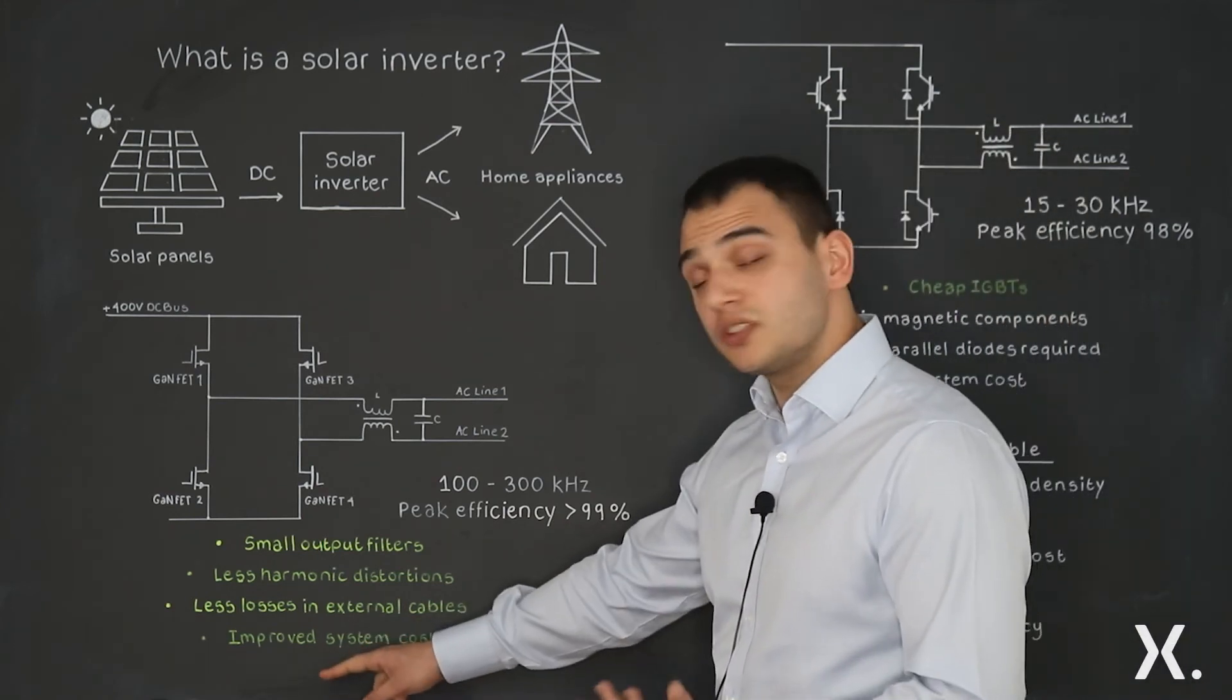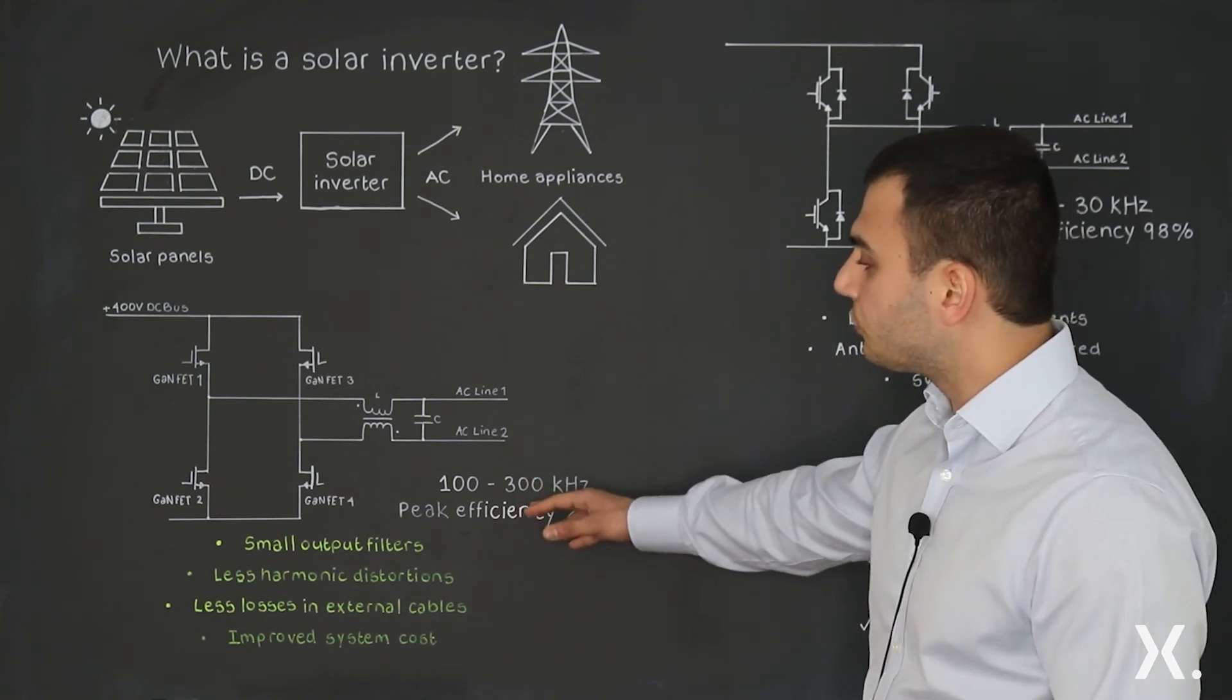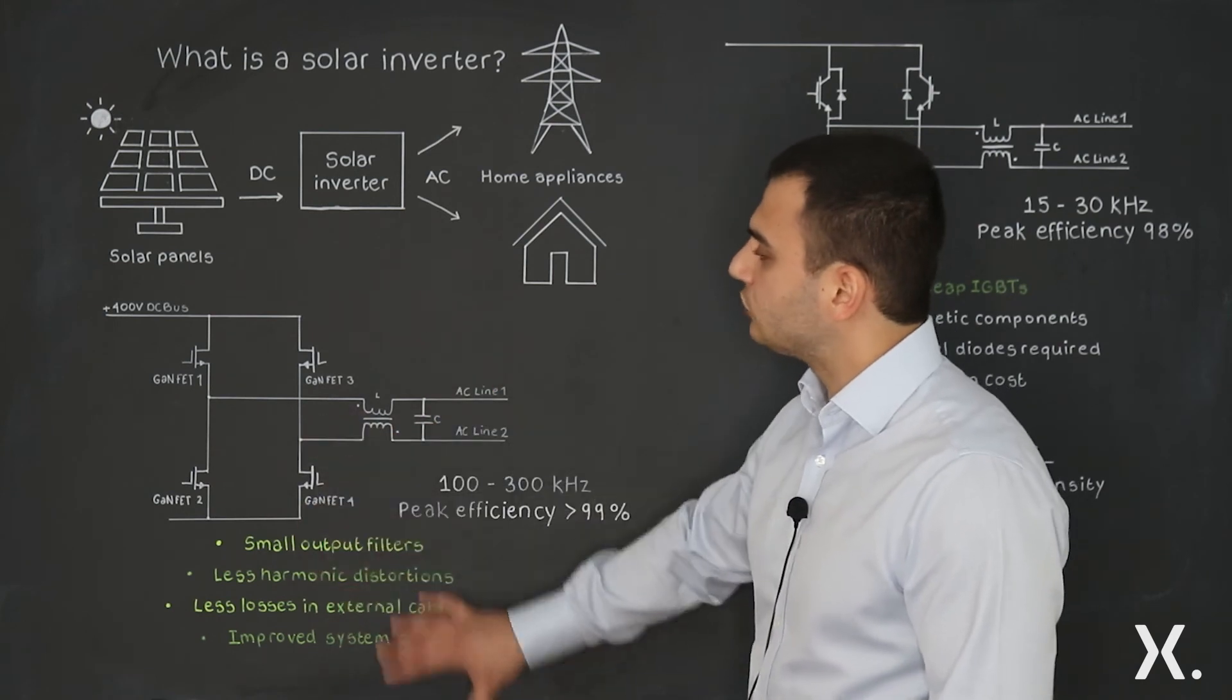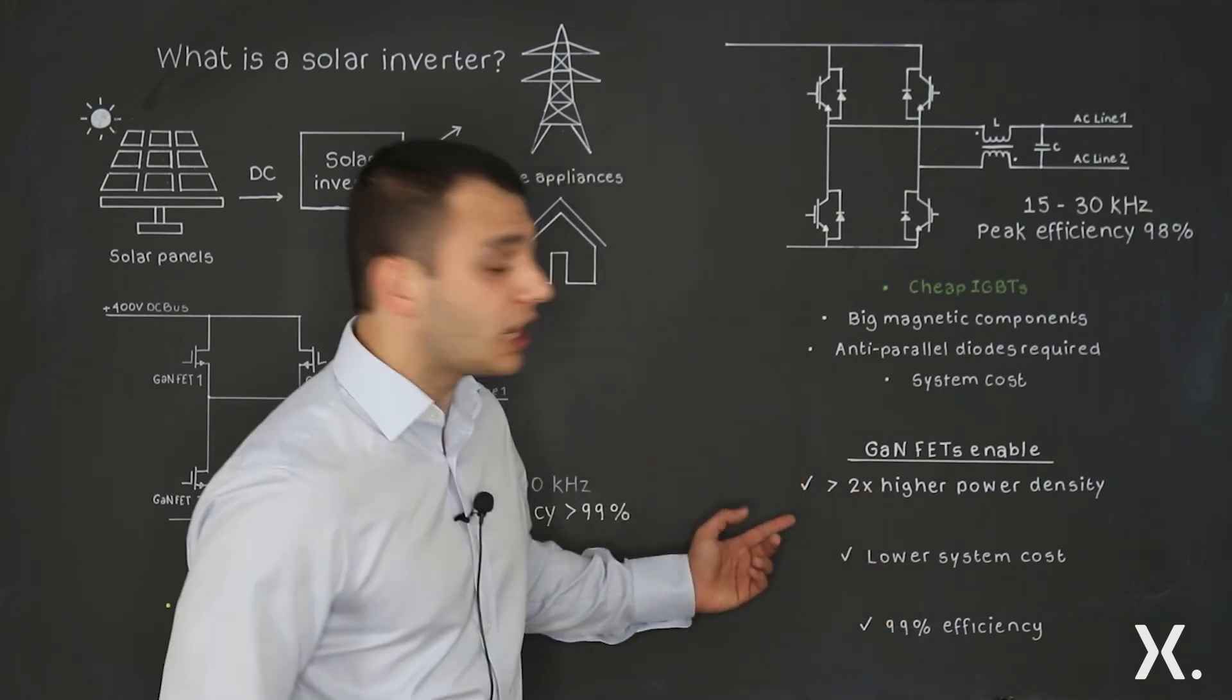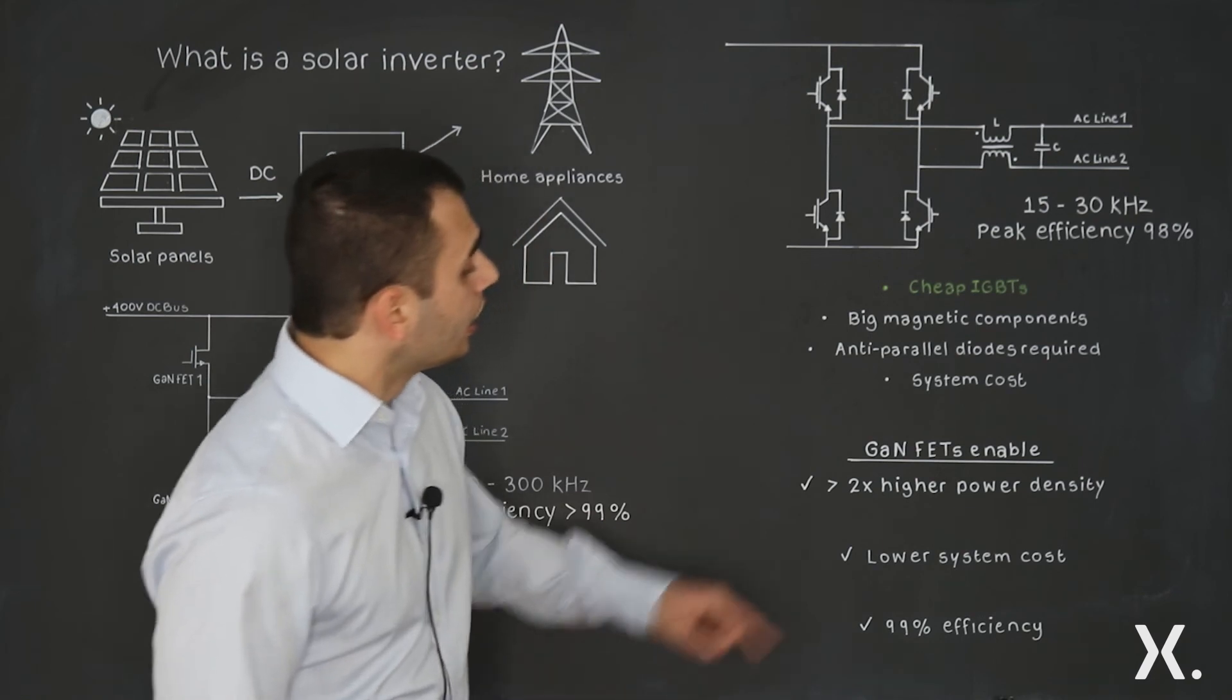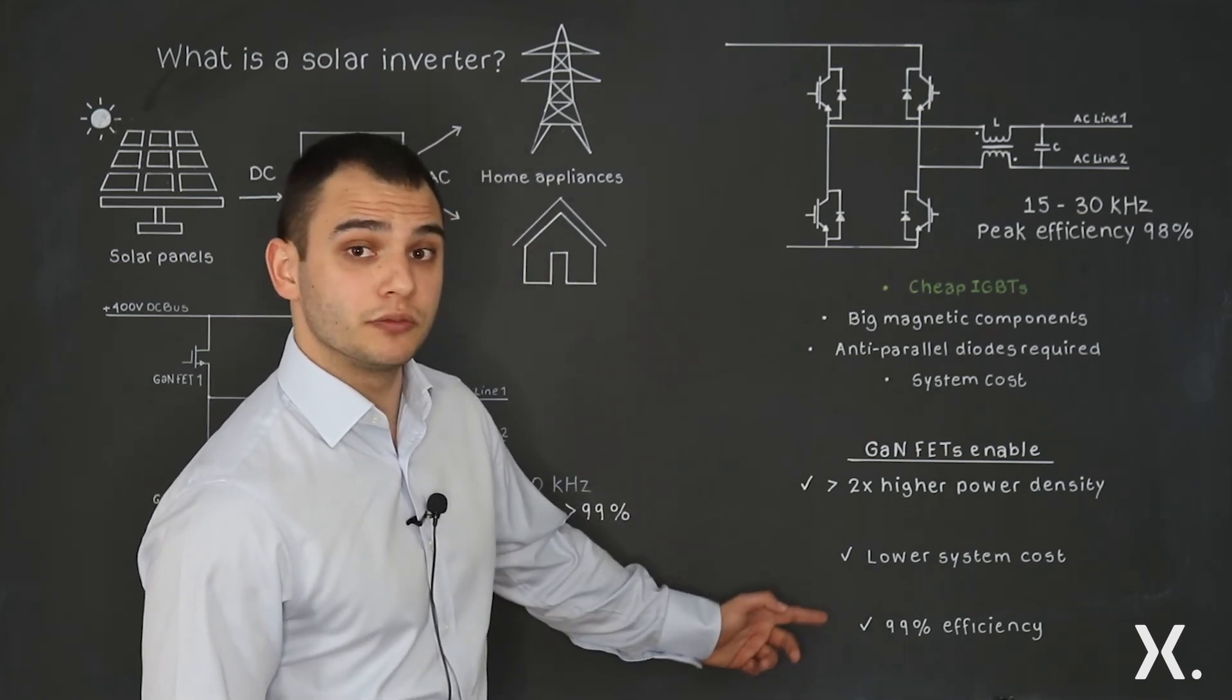So the overall system cost is improved by this increase in frequency because you have such a tremendous increase in power density. Really, what GANFETs enable is at least two times higher power density in these DC-AC converters, lower system cost, and 99% efficiency.